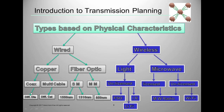Coaxial cables come in different diameter sizes such as 1-inch and 1/4-inch. Ethernet cables come in different categories like Category 5 or Category 6. In optical fiber, single mode uses 1550 nm wavelength for very long range and 1310 nm for medium range, while multi mode uses 850 nm and is used within data centers only, as it does not have a very long range.